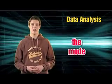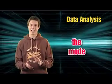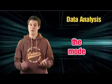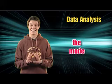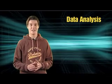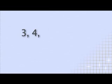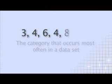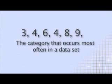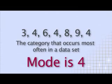Lastly, the mode. This is the category that occurs most often in a data set. So the mode of 3, 4, 6, 4, 8, 9 and 4 is 4.